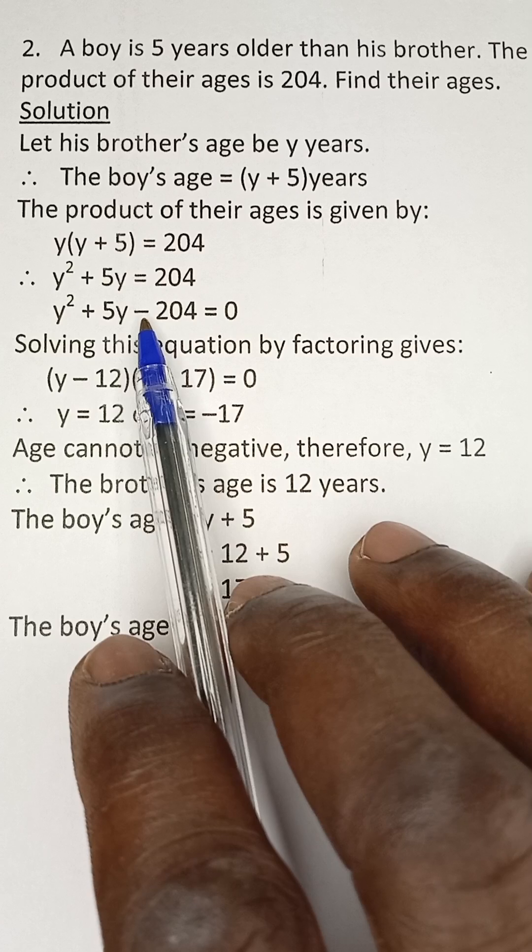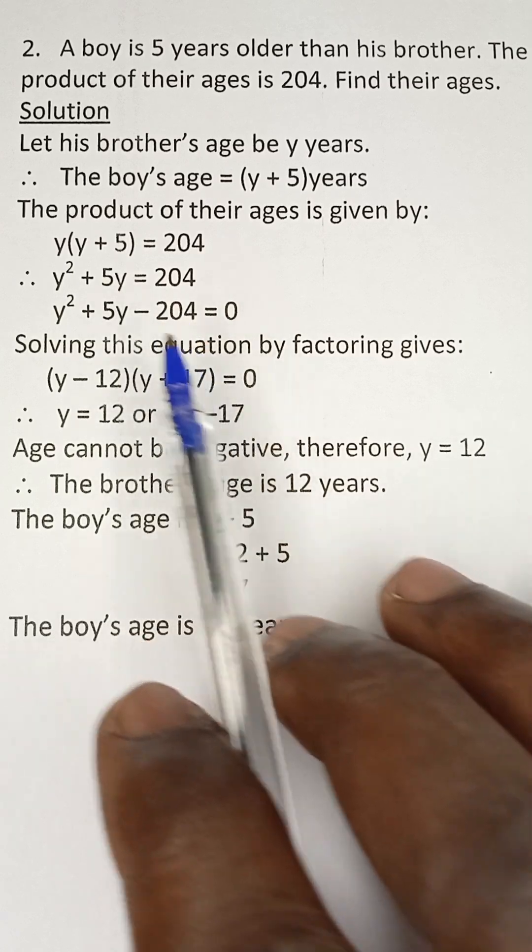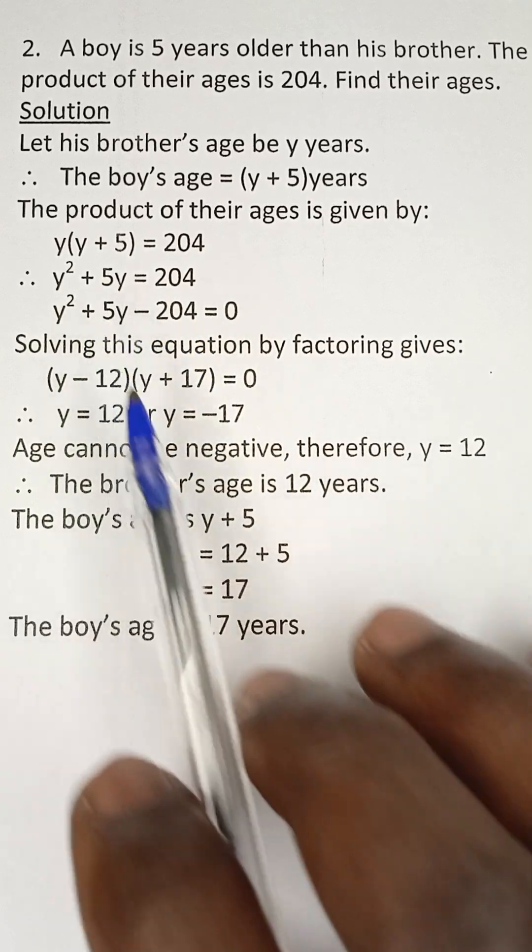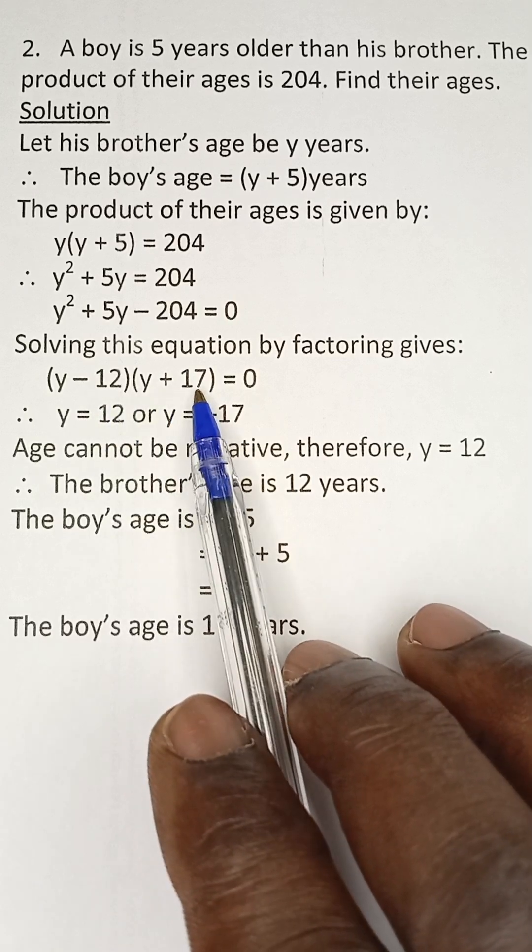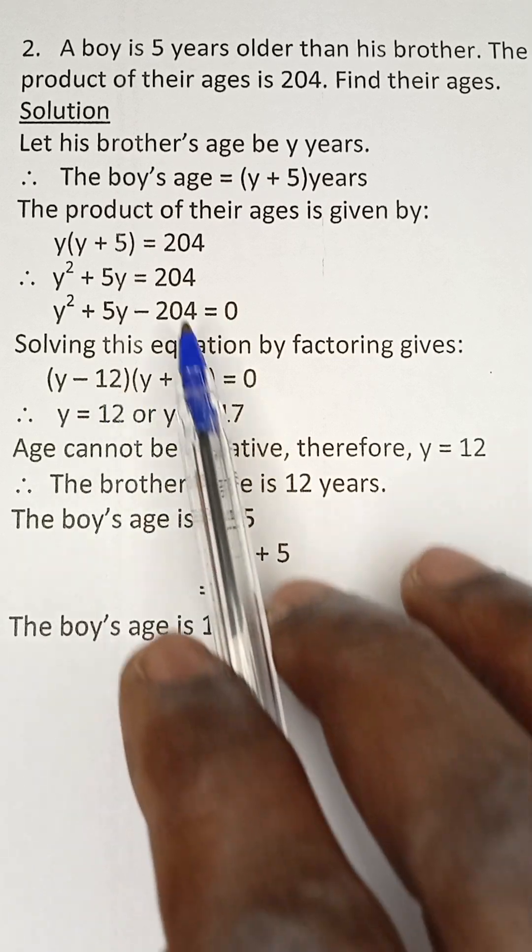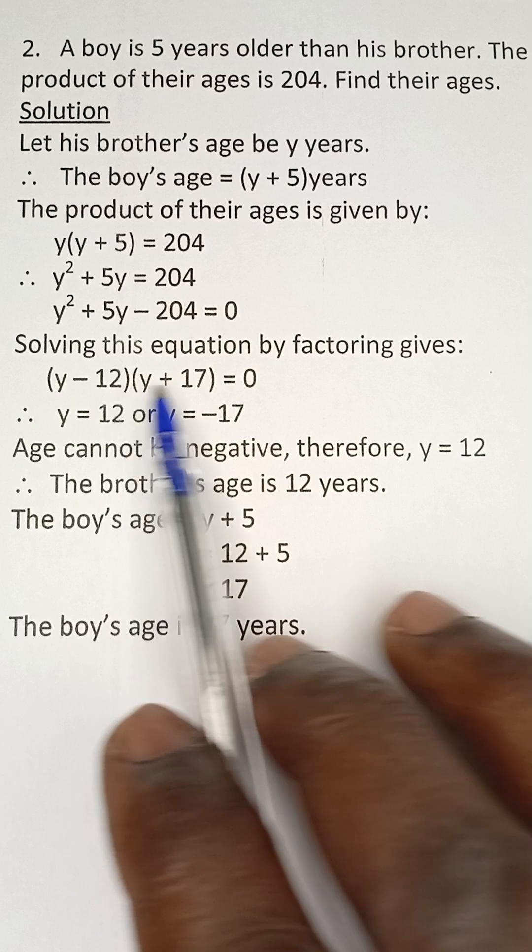So two numbers that when you multiply them, their product will give you negative 204, and their sum will be positive five. The two numbers are negative 12 and positive 17. If you multiply these two you have negative 204, and if you add these two you have positive five.